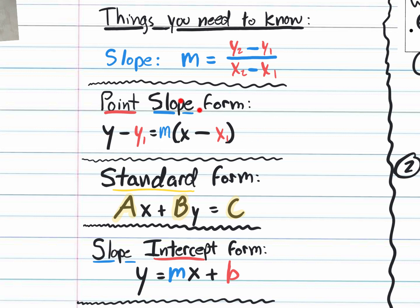Why do they call it point-slope form? Because when it's organized as Y minus Y1 equals M(X minus X1), you can clearly see a point (X1, Y1) and a slope. Standard form is AX plus BY equals C — no fractions, no decimals, with Xs and Ys on the left side and the number by itself on the right. Standard form is great for finding X and Y intercepts.